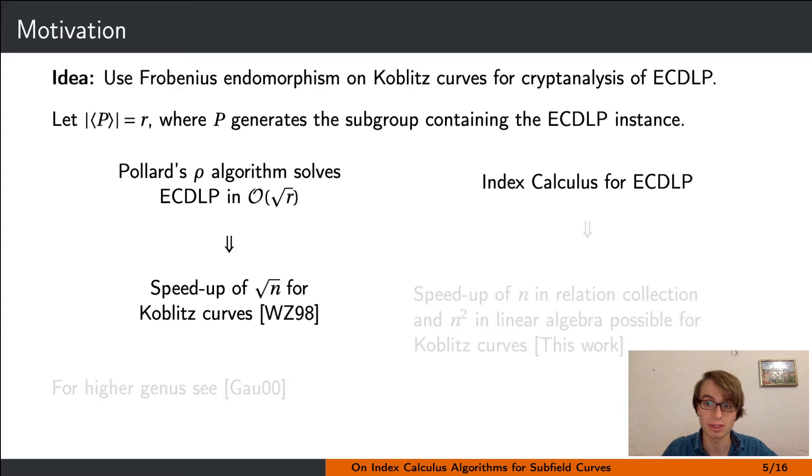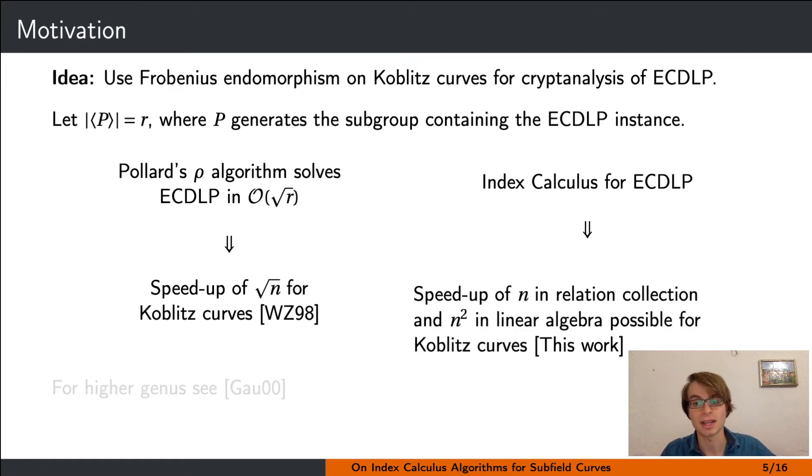Another variant to solve discrete logarithms is to use index calculus methods. This was a very active area of research until some years ago. The work in our paper gives a way to speed up index calculus methods for Koblitz curves—namely, we accelerate the relation collection by a factor n and the linear algebra step by a factor n^2. The easier case of speeding up index calculus in higher genus curves was previously discussed by Gaudry.